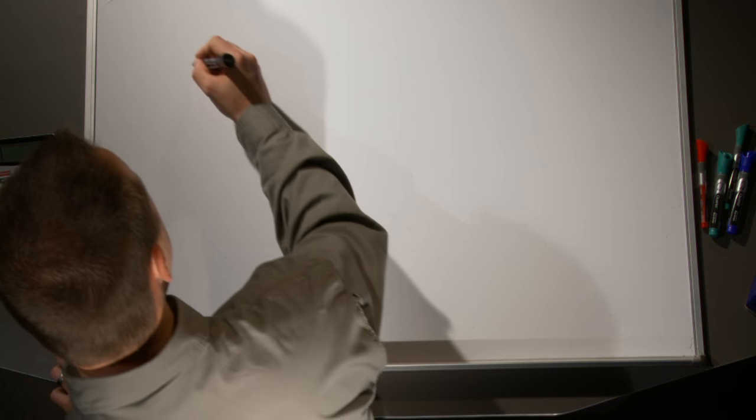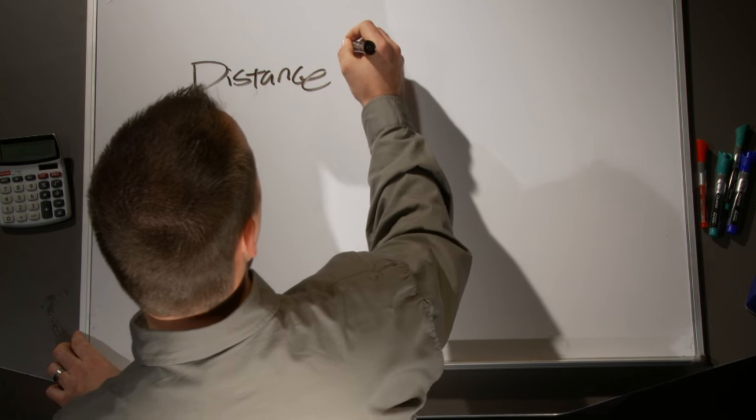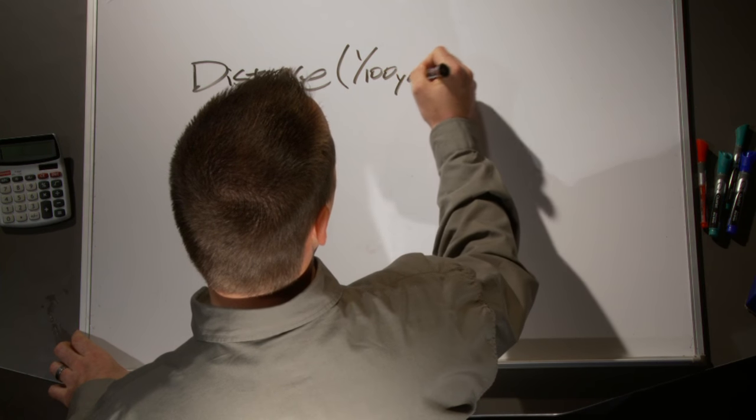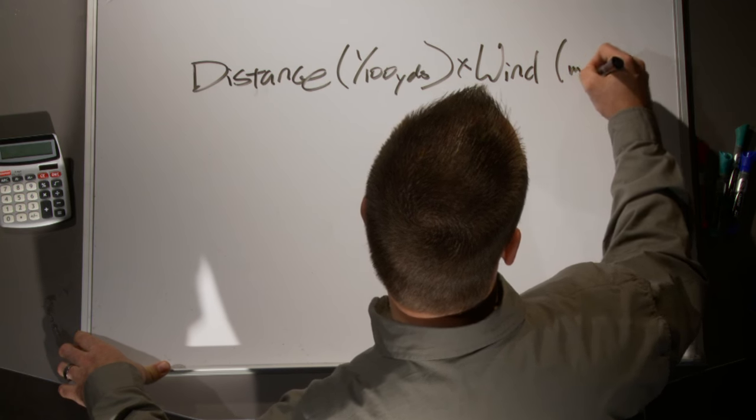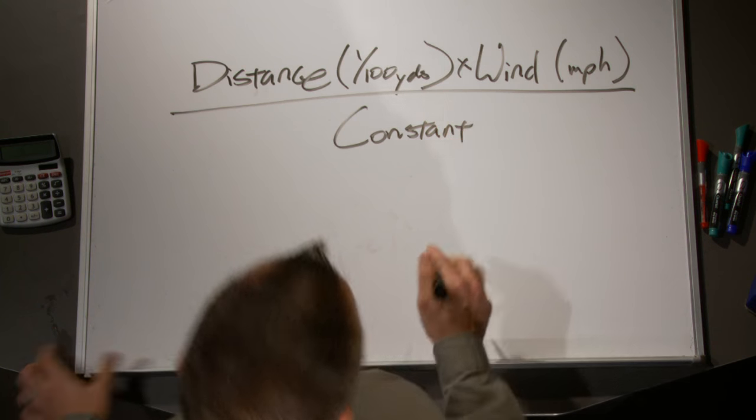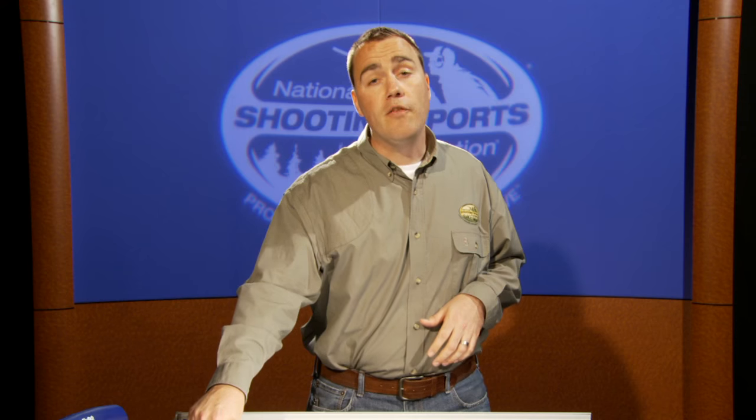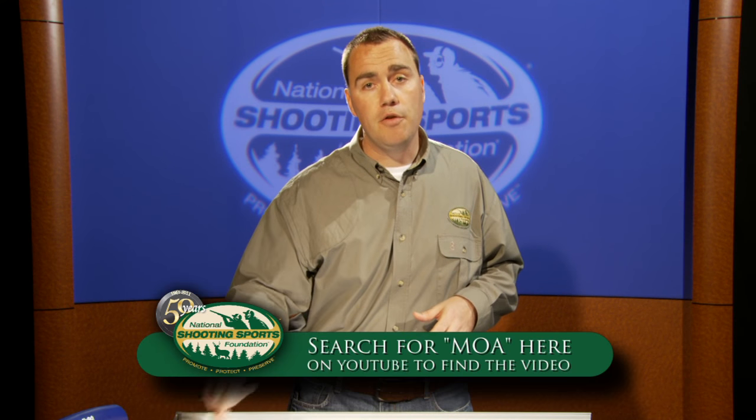But this formula can work, though it's not always going to be the best answer for you. Here's the formula: you take the distance to the target in hundreds of yards, multiply that by the wind speed in miles per hour, then divide all of that by a constant. When you work this formula out, you end up with your answer in minutes of angle. We covered minutes of angle in earlier videos — if you need a refresher, go back and check those out first so you understand what we're going to do with this.